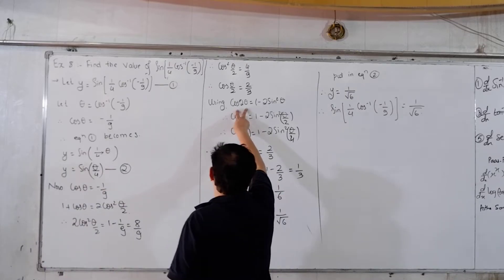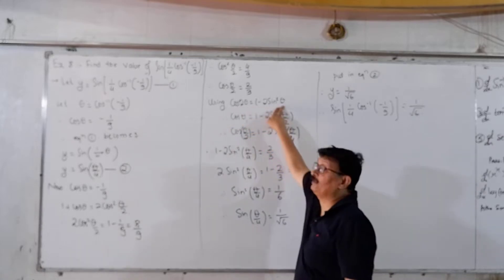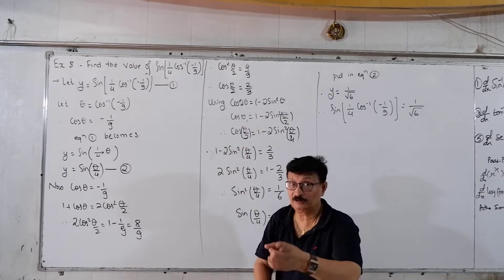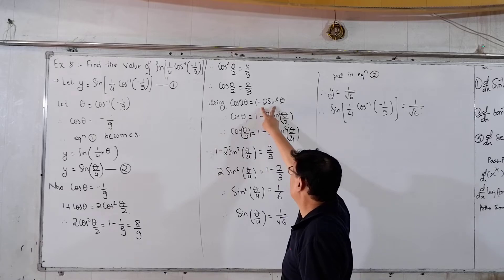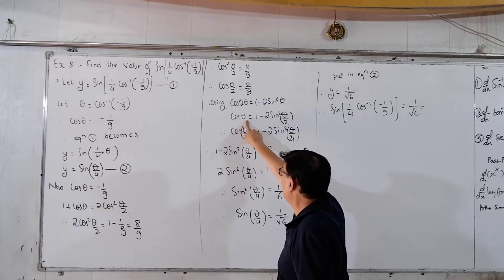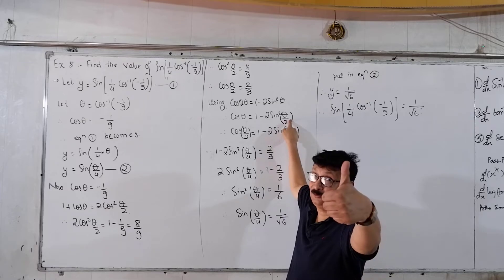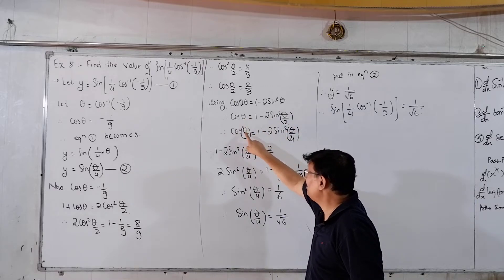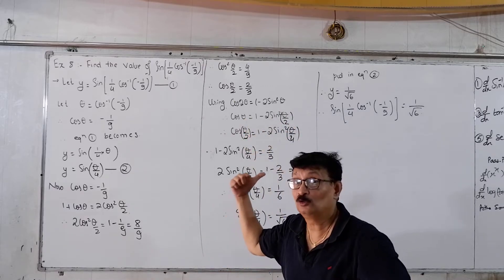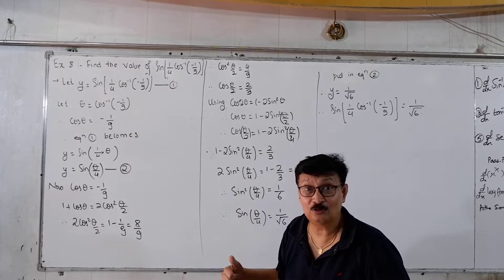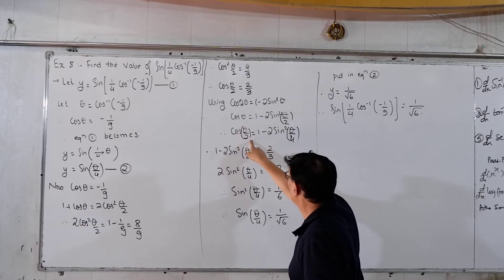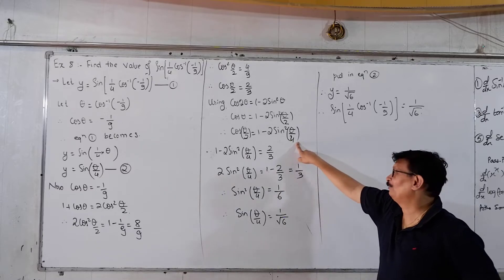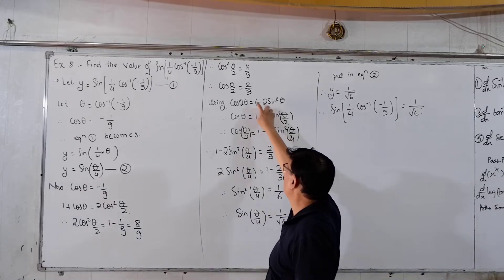Now apply the double-angle formula: cos(2α) = 1 − 2sin²(α). Substituting α = θ/4: cos(θ/2) = 1 − 2sin²(θ/4). Since cos(θ/2) = 2/3, we get 1 − 2sin²(θ/4) = 2/3.